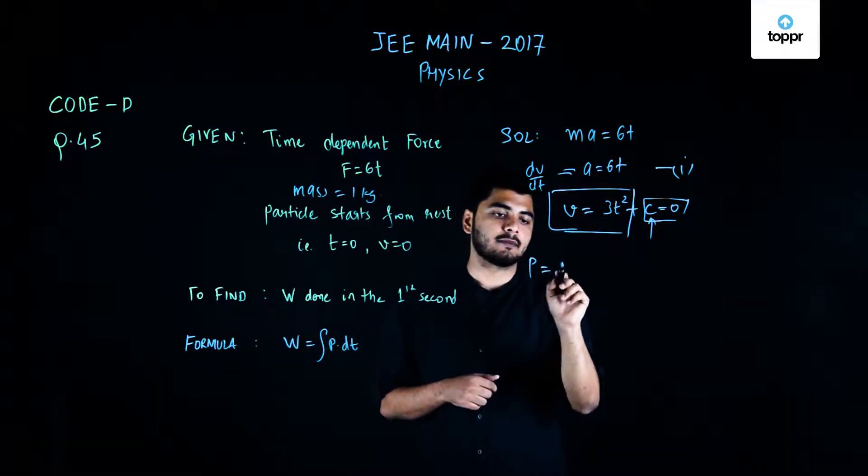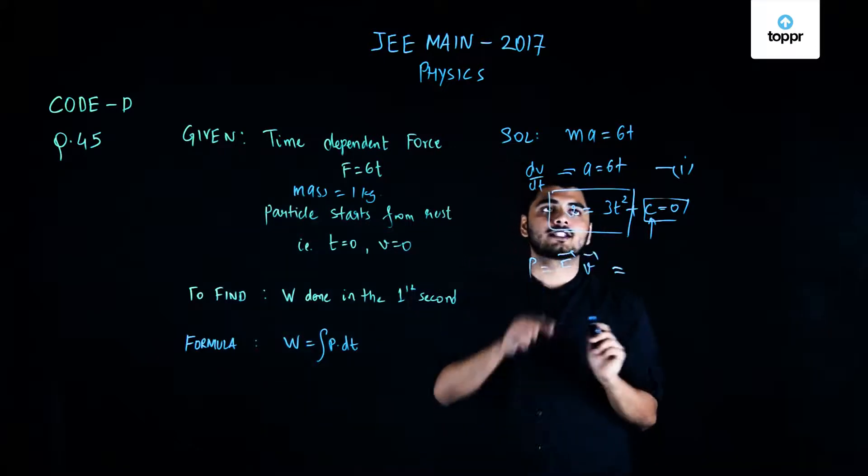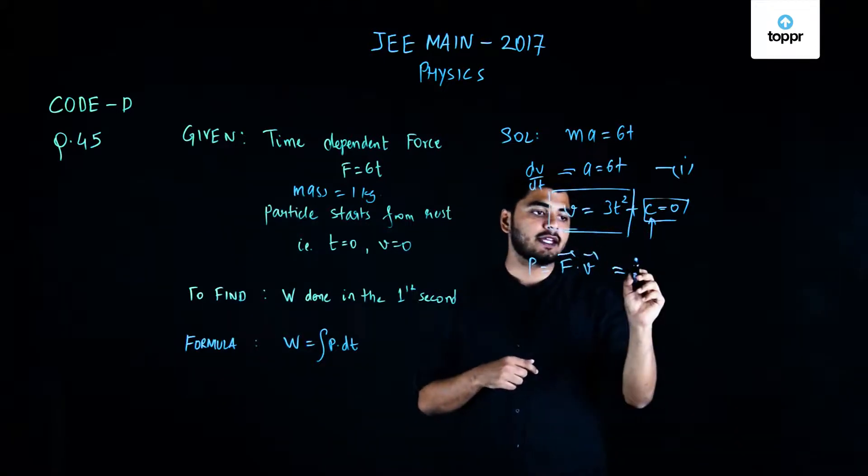Now my power is nothing but force times velocity, and hence that is nothing but 3t square into 6t, which will give me 18t cube.